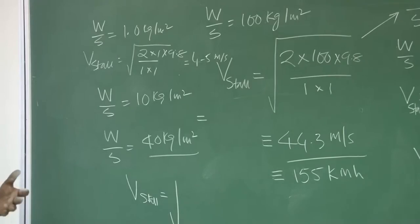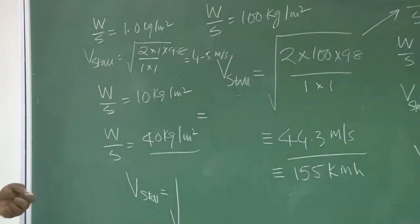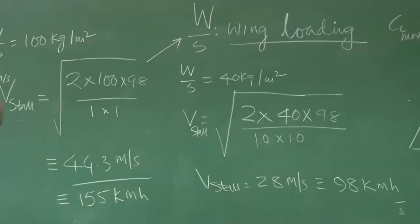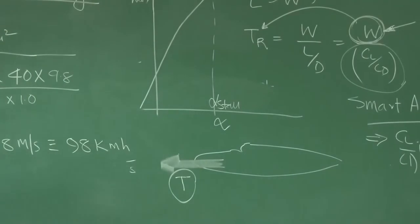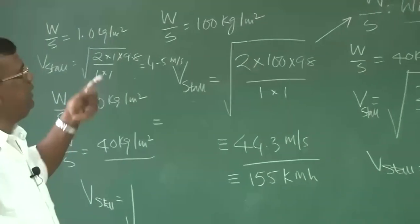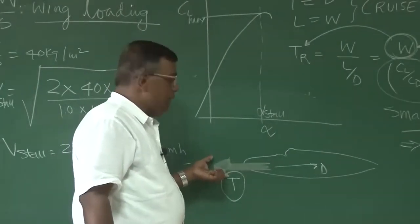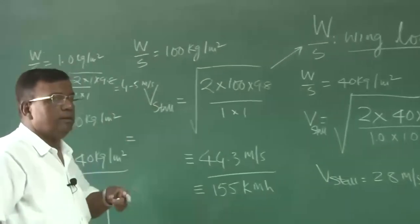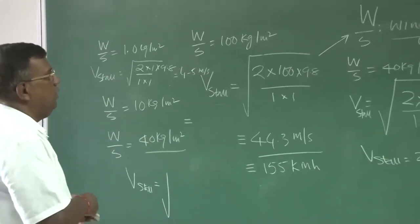V stall means minimum speed required to maintain lift equal to weight. The engine thrust or power must be capable enough to overcome the drag and maintain the required speed. If this number is more, it means you need a higher power engine, which means the engine weight will increase, and the wing loading will change again — everything goes into an iterative mode. As a good designer, you should understand the implications of wing loading.